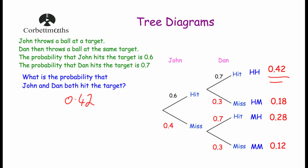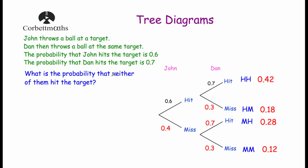The next question asks: what is the probability that neither of them hit the target? That would be John missing and Dan missing — our miss-miss outcome — which is 0.12.